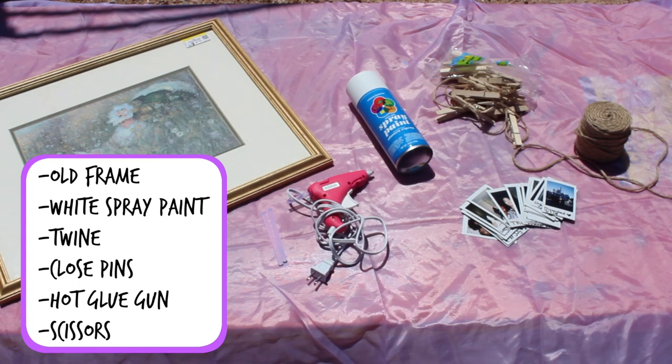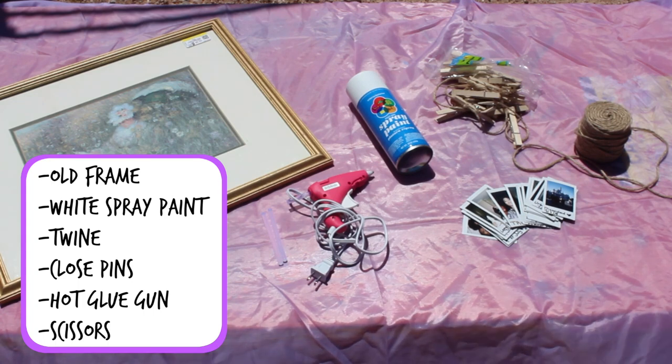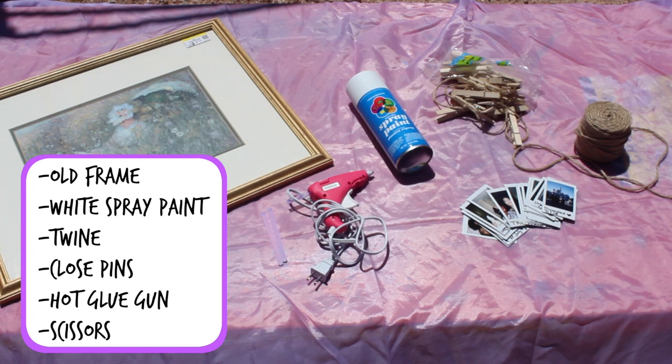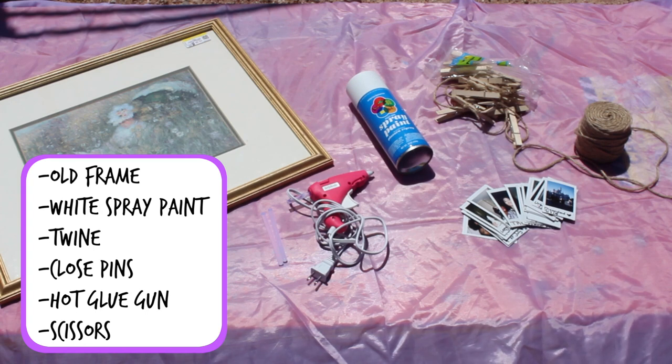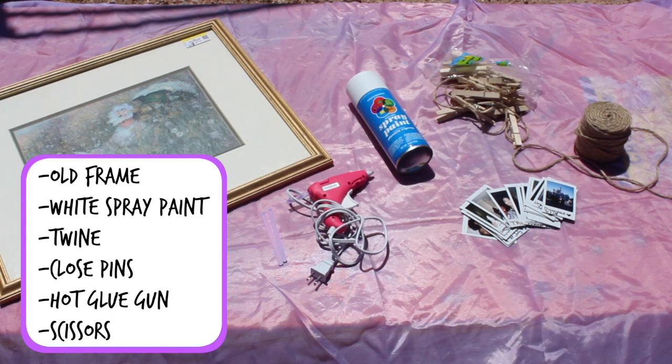For this DIY you will need an old frame and I got mine from Goodwill, white spray paint, twine which I got from Walmart, clothespins and a hot glue gun which I also got from Joann's, and then scissors. And don't forget your Polaroid pictures. I took pictures so those are my Polaroid pictures. Get it?